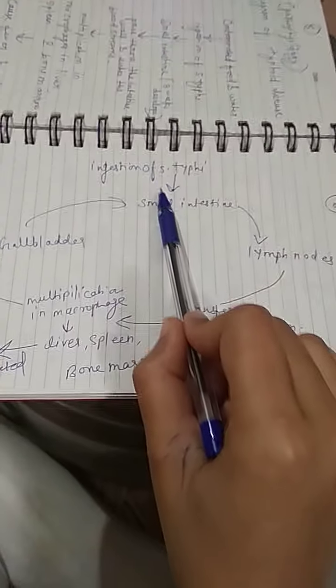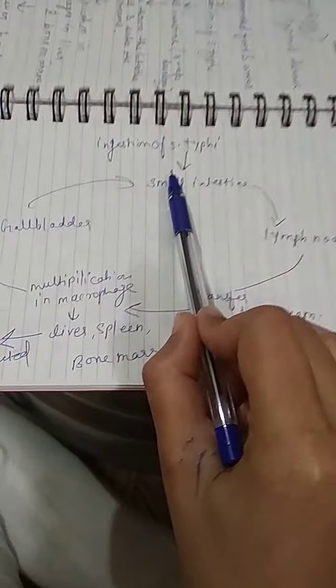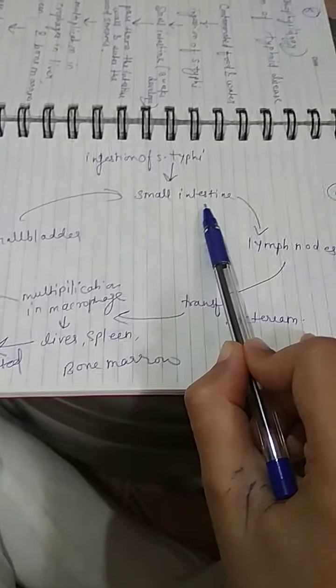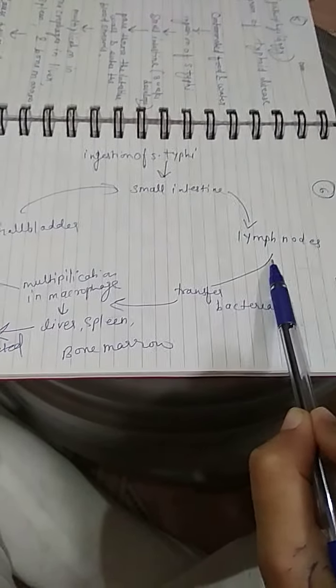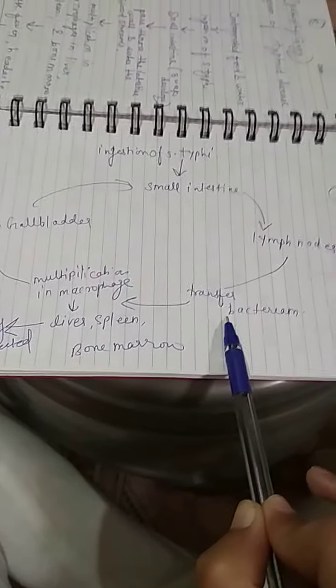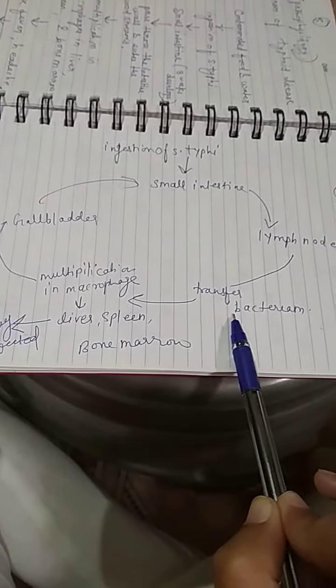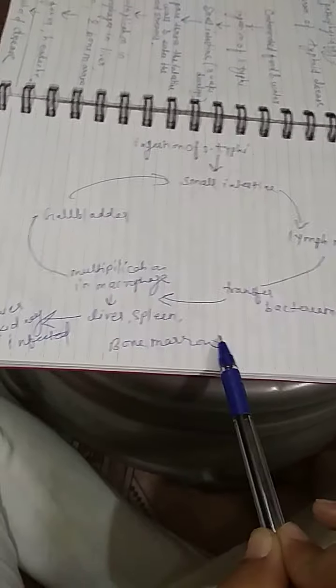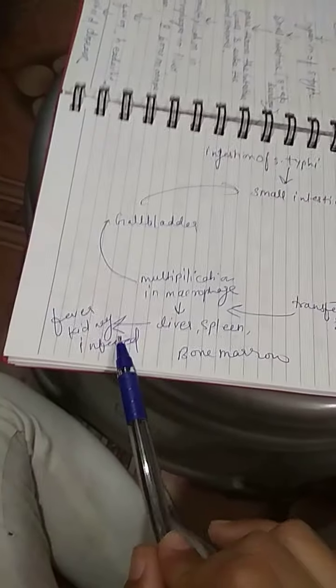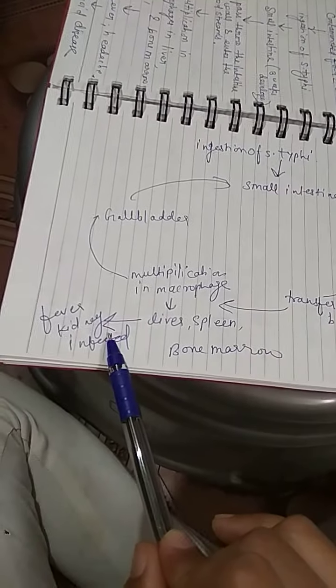Through a diagram, we can see that Salmonella typhi enters through the small intestine, then the lymph nodes transfer bacteria to the liver, spleen, and bone marrow, after which the kidney becomes damaged and fever is caused by this disease.